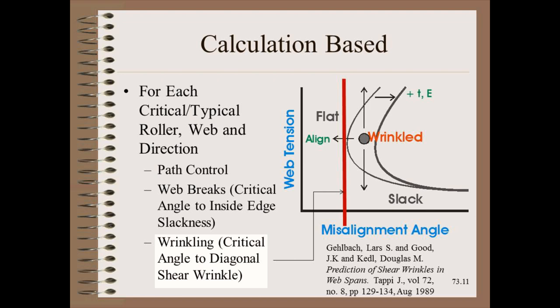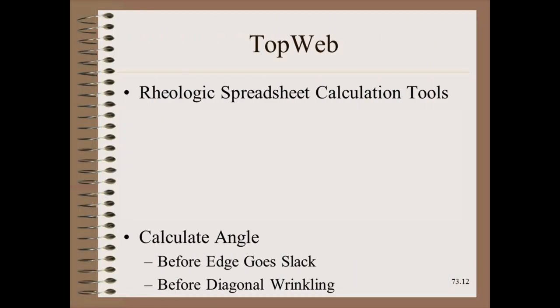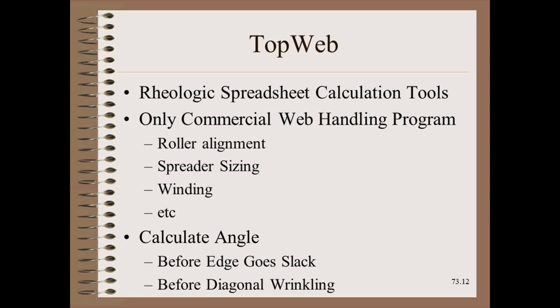This maximum level of misalignment is given as the red line. While the calculations for misalignment wrinkles are well-tested and simpler than most web handling models, they are probably not something you want to do from scratch. Rather, the Top Web program from Railogic will do this quite simply for you. It can calculate two types of failures: when one edge goes slack, and a diagonal wrinkle that passes over the crooked roller. This commercial web handling program also helps with roller traction calculations, spreader sizing, wound roll models, and much more.